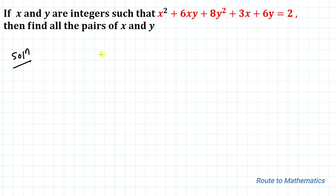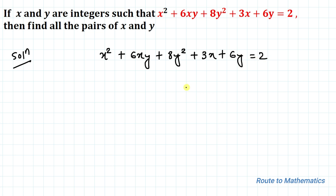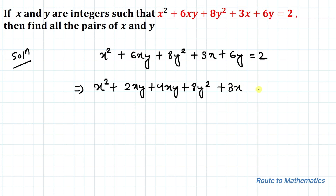We have x² + 6xy + 8y² + 3x + 6y = 2. In the next step we can write x² + 6xy as 2xy + 4xy + 8y² + 3x + 6y = 2. Taking x common from the first two terms, we have x multiplied with (x + 2y).